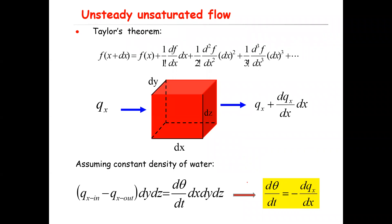The mathematical form of this statement is: qx is the velocity entering in the x direction, and the outflow is qx plus the derivative of qx with respect to x times dx. If we multiply the velocity by the area, we get the volumetric flux. So the difference between the volumetric flux entering and exiting — qx in minus qx out — times the area equals the time rate of change.